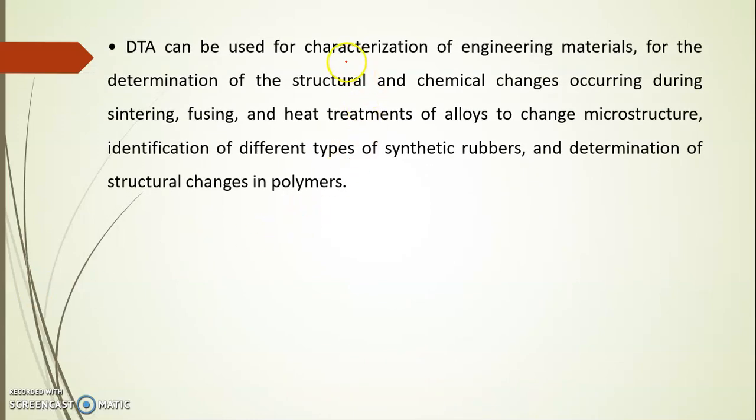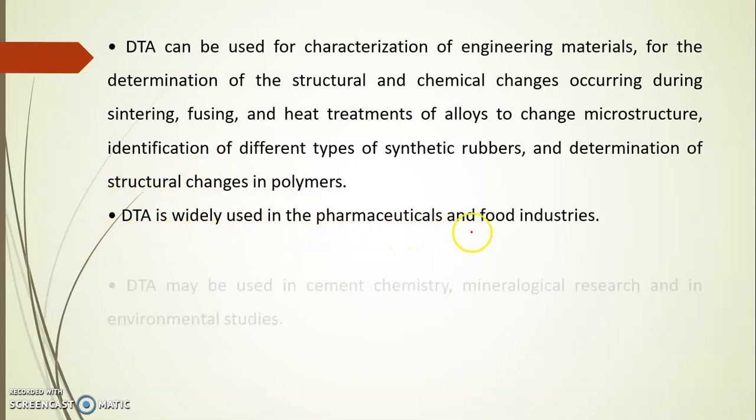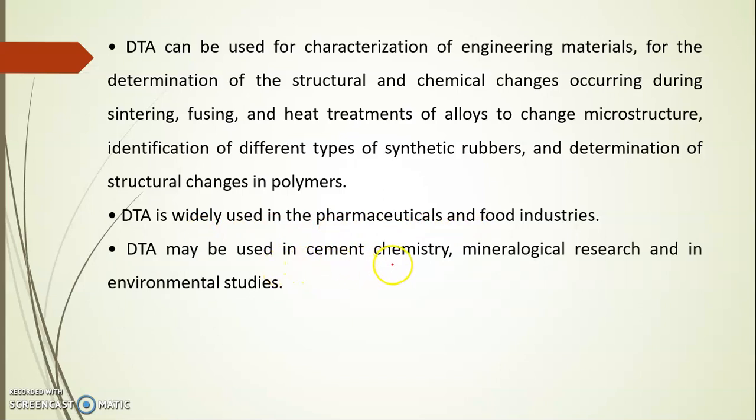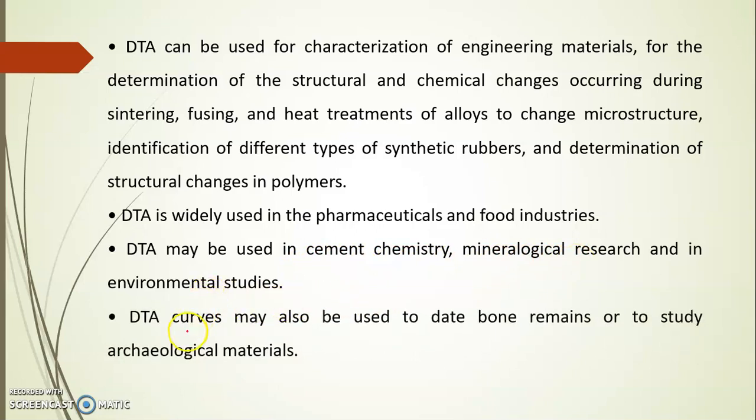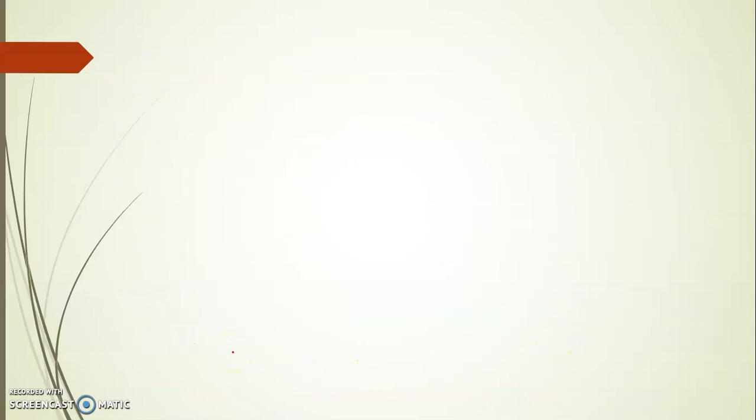DTA can also be used for the characterization of engineering materials, for the determination of structural and chemical changes occurring during sintering, fusing and heat treatments of alloys to change microstructure, identification of different types of synthetic rubbers and it is also used for the determination of structural changes occurring in polymers. DTA is widely used in the pharmaceuticals and food industry, it may be used in cement chemistry, mineralogical research and in environmental studies. DTA curves may also be used to date bone remains or to study archaeological materials.